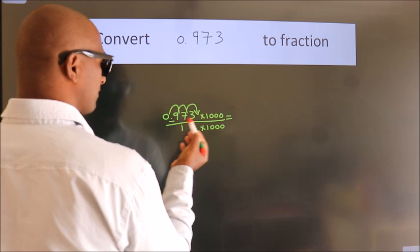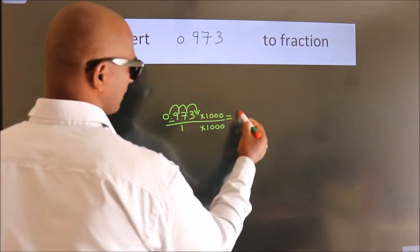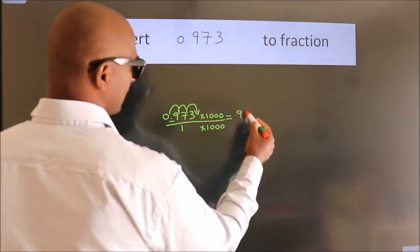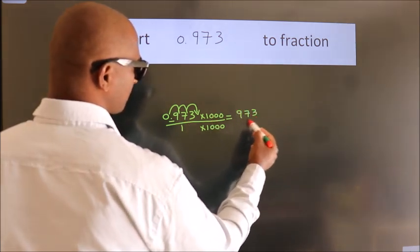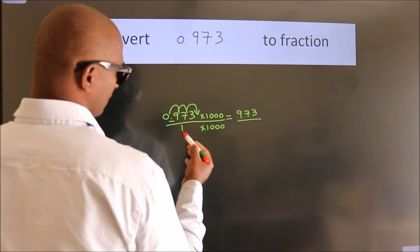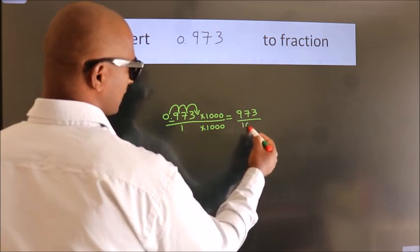0.973 multiplied by 1000 equals 973. 1 multiplied by 1000 equals 1000.